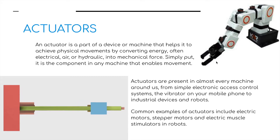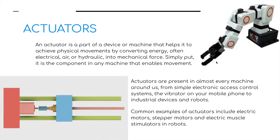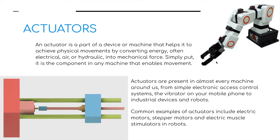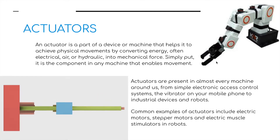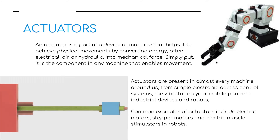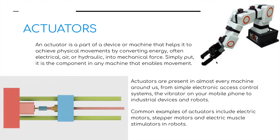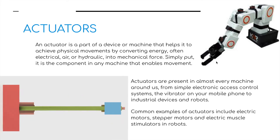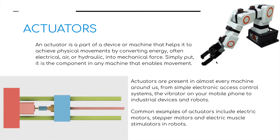Actuators are present in almost every machine around us, from simple electronic access control systems such as a vibrator on our mobile phone that vibrates the phone in our pockets, to industrial devices and robots, and machines on a production line.